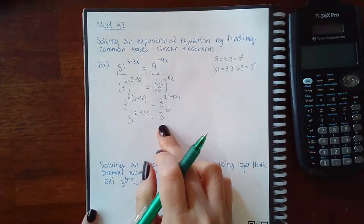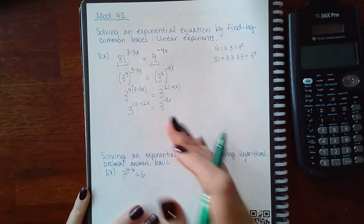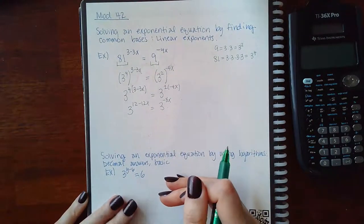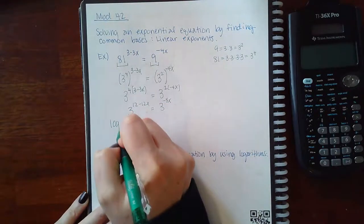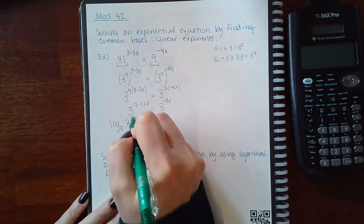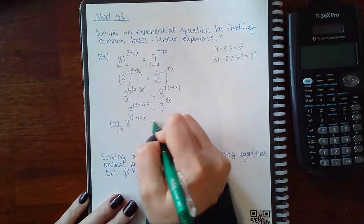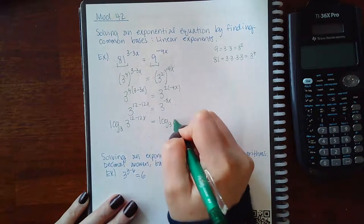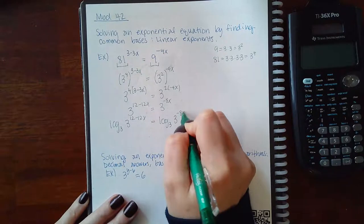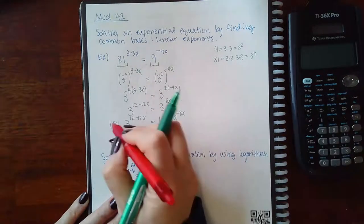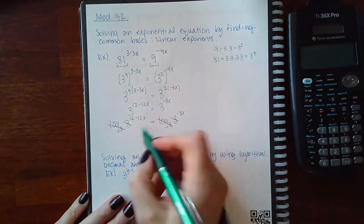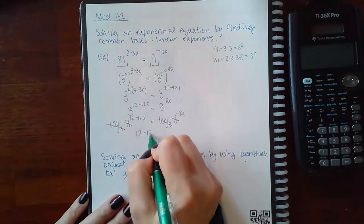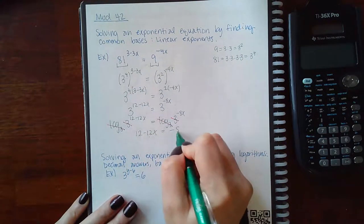And how do you get rid of exponentials? You apply the inverse logarithm. So that means I will take the log base 3 on both sides. And what does that do? It gets rid of the exponents. This base cancels this base. This base cancels this base. So I'm left with 12 minus 12x equal to negative 8x.